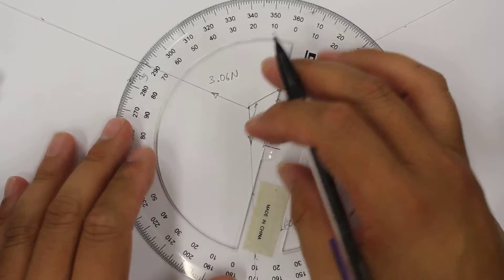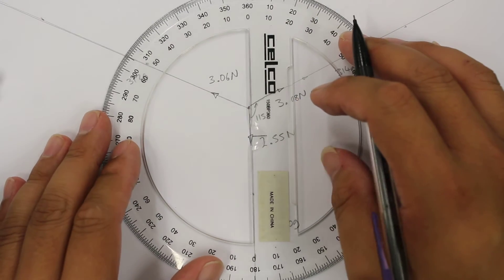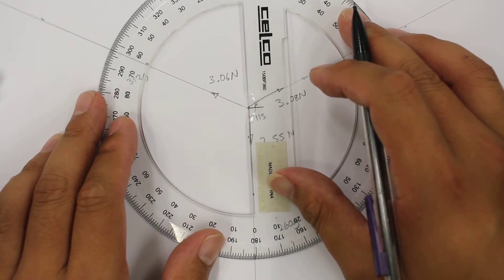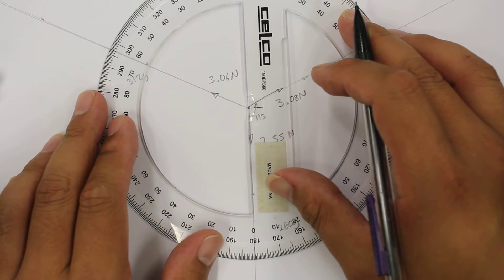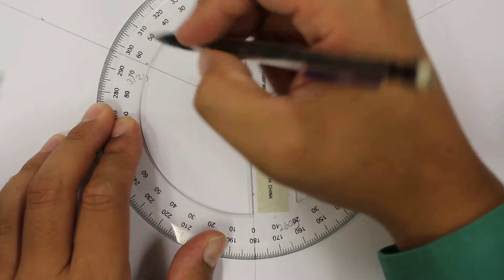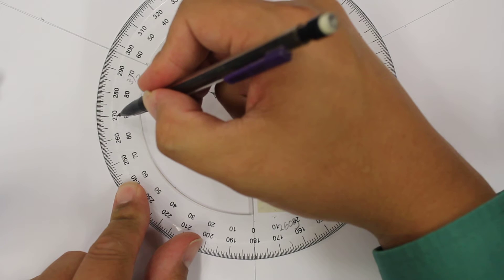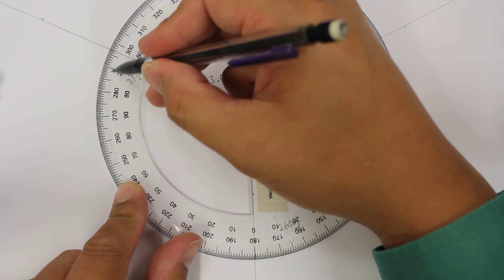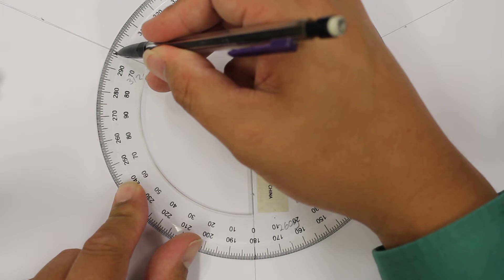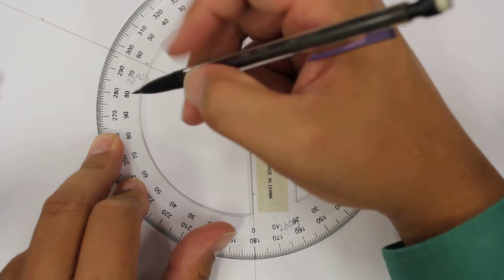So we can do the same going towards the left or going clockwise. Alright, so we've got 90, 110, 120, 126.5.